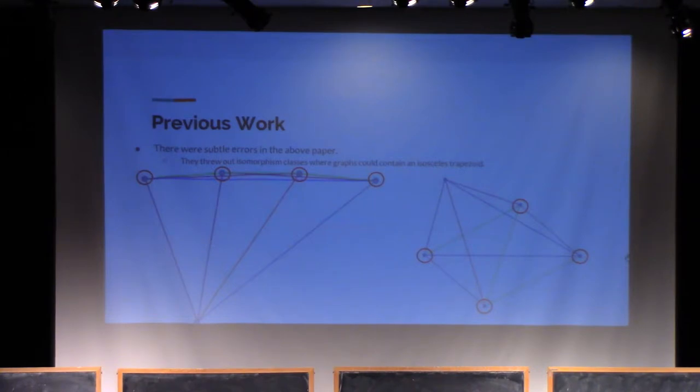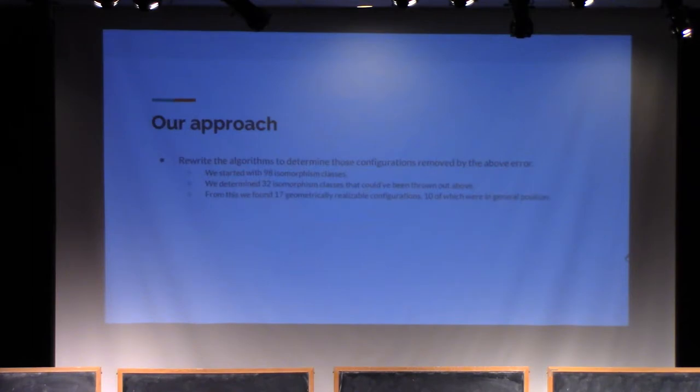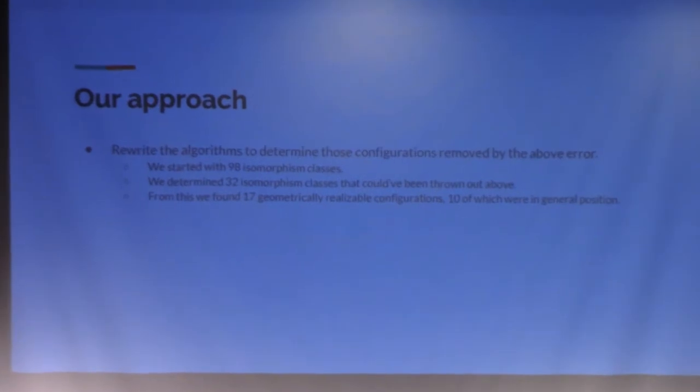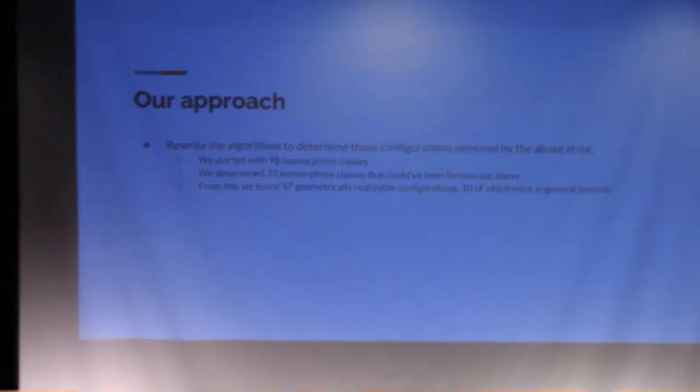it's possible to have two graphs in the same isomorphism class, one with a trapezoid and the other without a trapezoid. And so by throwing out the entire isomorphism class, you're missing out on configurations like that on the right.